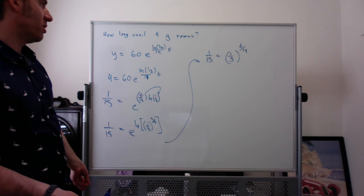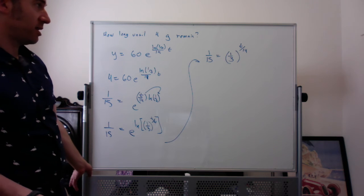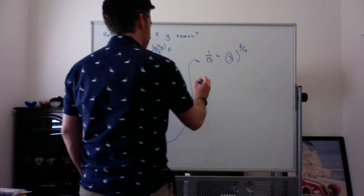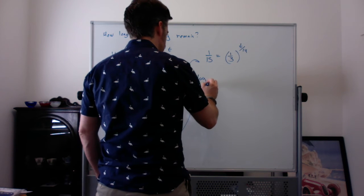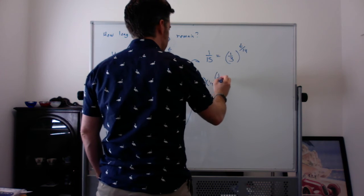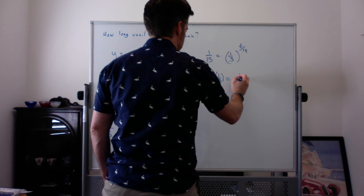It would just kind of solve the problem. I could say log base 1/3 of 1/15 equals t/14. And then multiply both sides by 14, because you're changing the exponential into a logarithm.